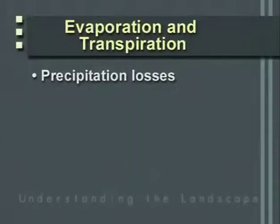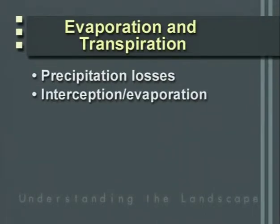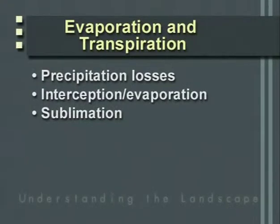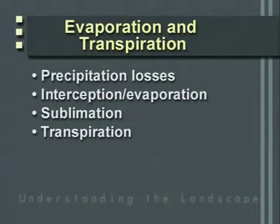Two other losses of precipitation are evaporation and transpiration. We can have evaporation of intercepted water. Interception of snow is a significant loss — snow is able to sublimate, going directly from a solid into the vapor phase, so it's lost before reaching the forest floor. Precipitation as rain, equally intercepted, can be lost directly by evaporation. Transpiration is the water used by vegetation on site.